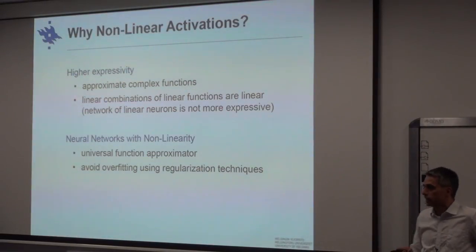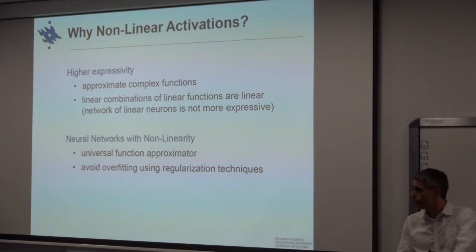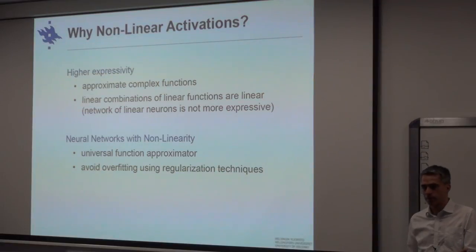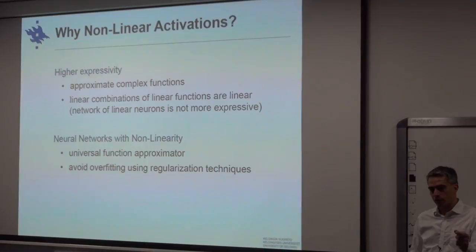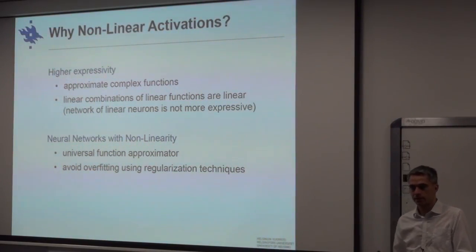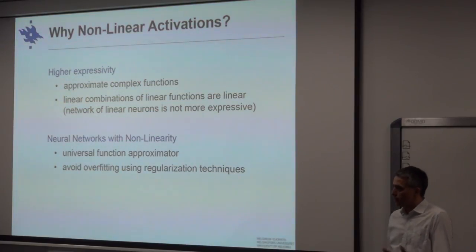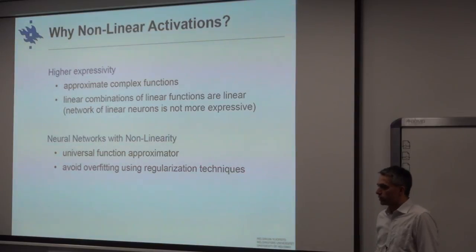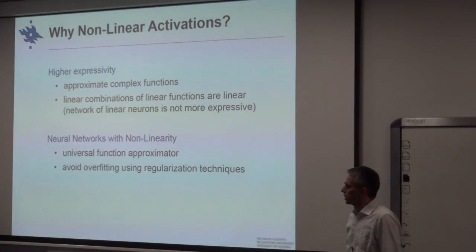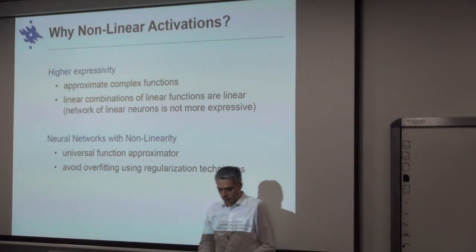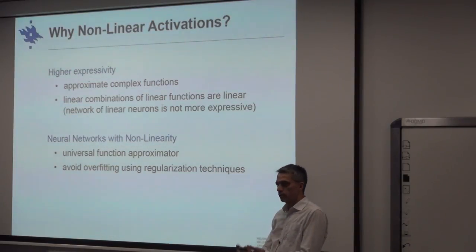About non-linearity: having non-linear activations makes the system much more expressive. If you combine linear functions you stay within a linear system and don't make it more complex. But with non-linearity, neural networks become universal function approximators — any kind of function can be approximated, making them very powerful for mapping inputs to outputs.